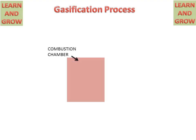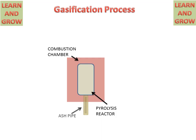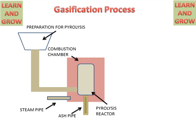Now we discuss the parts of the gasification process. We have a combustion chamber in which pyrolysis takes place. This is the pyrolysis reactor. This is the ash pipe for collecting ash, and this is the steam pipe for supplying steam to the pyrolysis reactor. This is the arrangement for preparation of the pyrolysis process.